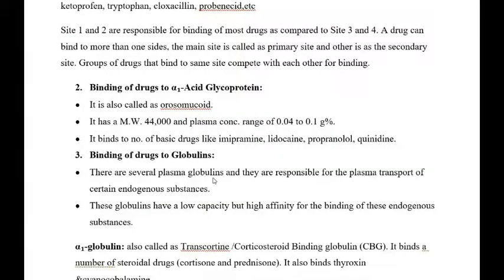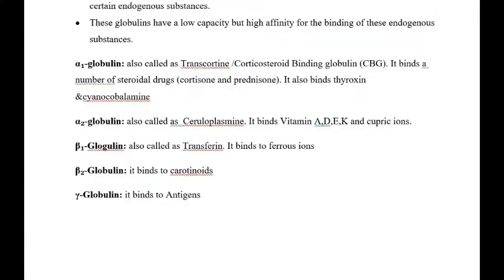Now coming to globulins and their drug binding. There are several plasma globulins responsible for the plasma transport of certain endogenous substances. These globulins have low capacity but high affinity for binding. Their types include: alpha-1 globulin, also called transcortin or corticosteroid-binding globulin (CBG), which binds steroidal drugs such as cortisone and prednisone, as well as thyroxine and cyanocobalamin. Alpha-2 globulin, also called ceruloplasmin, binds vitamins A, D, E, K and cupric ions. Beta-1 globulin, also called transferrin, binds ferrioxine. Beta-2 globulin binds carotenoids. Gamma globulin binds antigens.